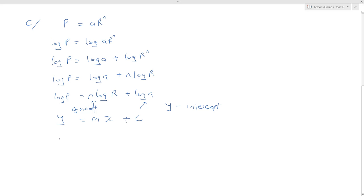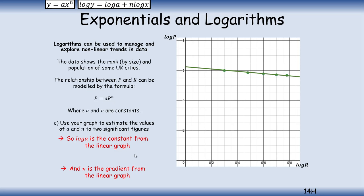Using our graph, we can determine the gradient and the intercept. From the graph, log a intercepts the log p axis at 6.2, so we can determine a as 10 to the power of 6.2. For n, which is the gradient, use rise divided by run on your sketch — you should be getting approximately minus 0.67.